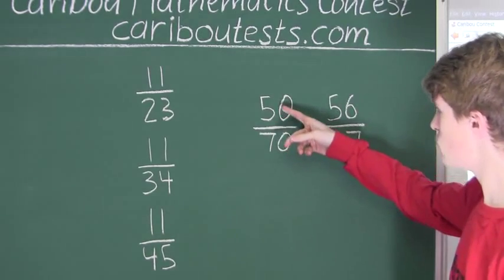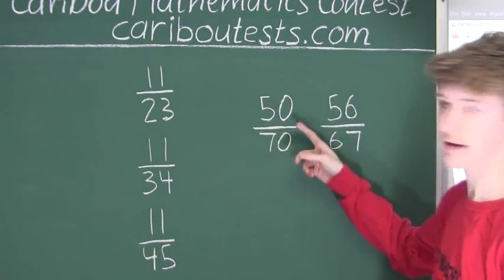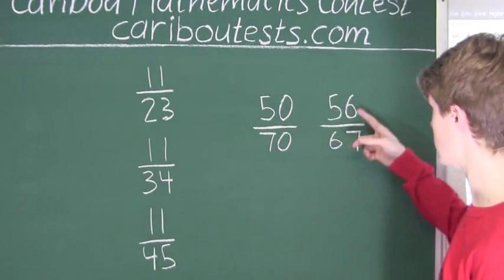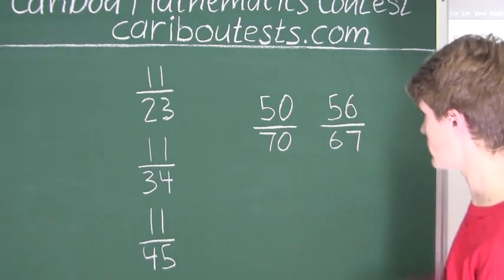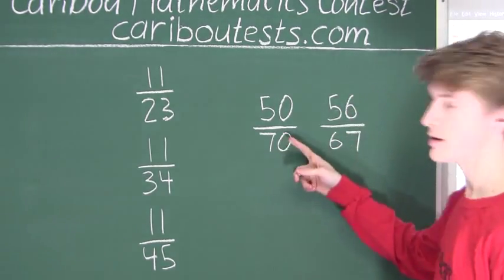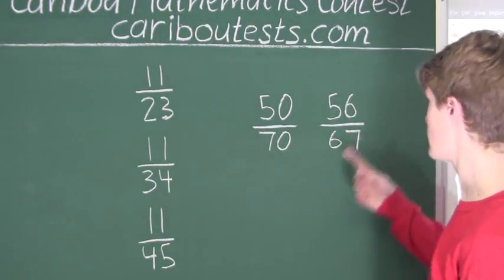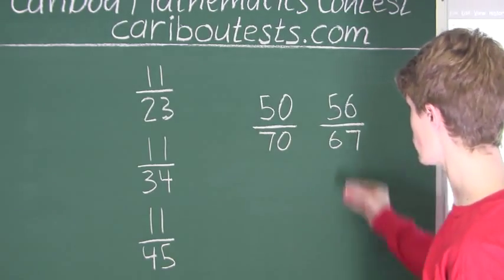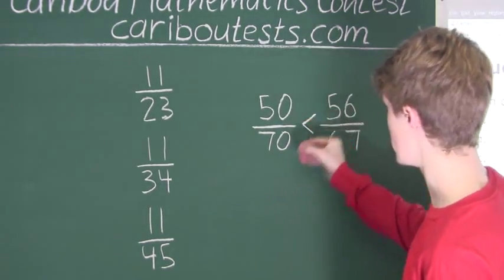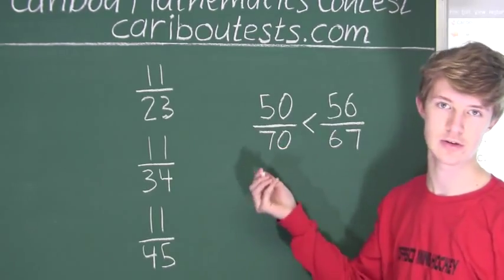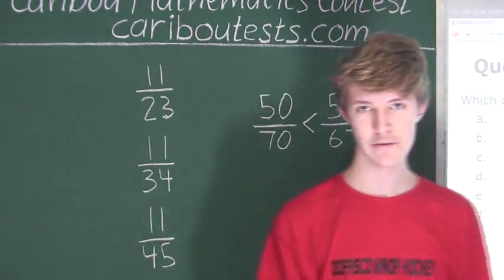We can see that the numerator in 50 over 70 is less than this numerator, which is 56, and the denominator is bigger than this denominator. So for those two reasons, 56 over 67 is greater than 50 over 70, which is also 5 over 7.